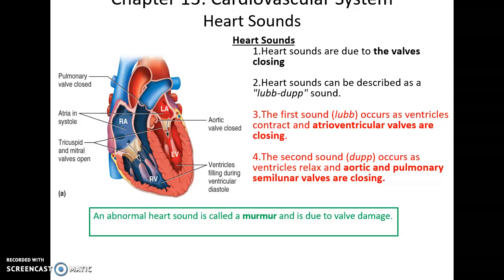When the heart beats, certain sounds are produced, often called lub-dub. The lub sound is caused by the closing of the atrioventricular valves when the ventricles contract. The dub sound occurs when the ventricles relax and blood backflows into the pulmonary and aortic valves, and the closing of those semilunar valves produces the dub. If there's any damage to the valves, there might be a murmur sound — an unexpected additional sound — which is a sign of damage to one or more heart valves.